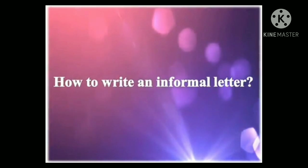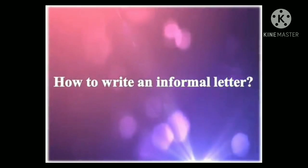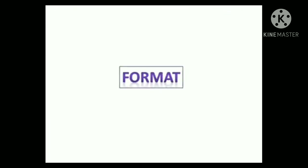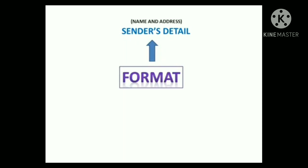So how do we write an informal letter? Let's first understand the format of the informal letter. An informal letter must have six things in it. Number one: Sender's details — the sender's name and address. The sender is the one who is writing the letter.